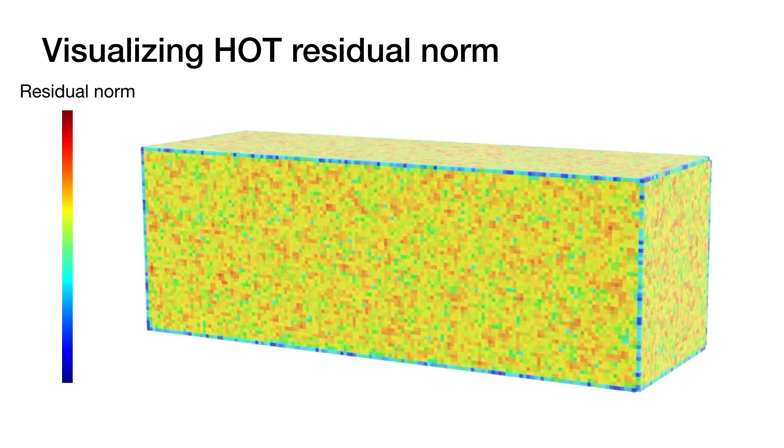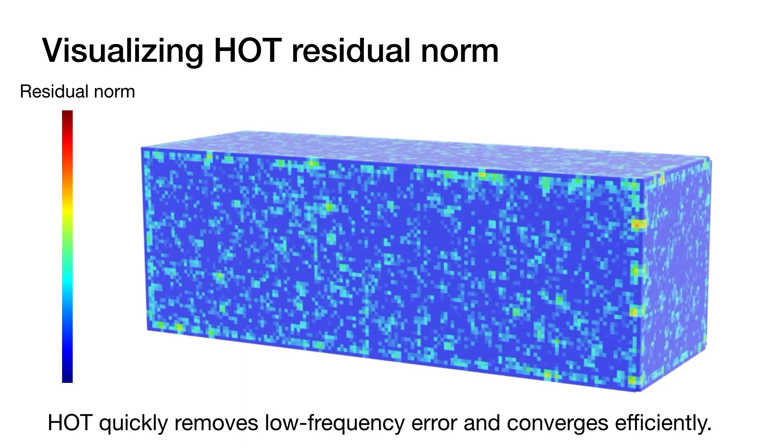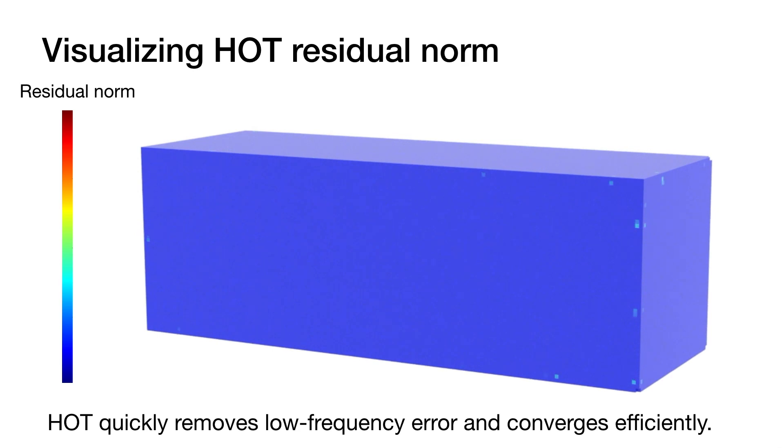Here, we visualize the residuals on the material space of a box initialized with randomly distributed deformation. In its first time step shown here, we see that HOT quickly removes low-frequency error and converges efficiently.